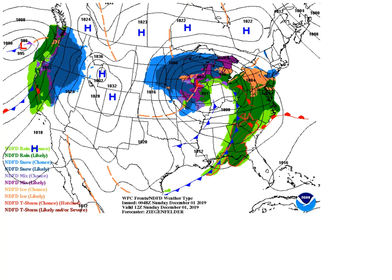The WPC surface forecast map valid at 12z on December 1st showed a strong occluded low pressure system located near the Wisconsin-Illinois border. The bulk of the snow, shaded in blue, was predicted to fall north of the low, wrapping around to its northwest and west in the cold conveyor belt.